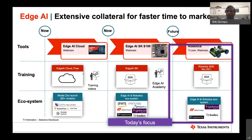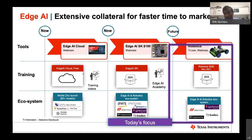The third pillar of our support system is the ecosystem. We have partnered with quite a few companies to offer a comprehensive ecosystem for customers — whether you're looking for algorithms, specialized industrial cameras for machine vision, or analytics expertise. We have multiple third-party partners to choose from. Looking ahead, we're going to have more development kits on the robotics side, as robotics is revolutionizing lifestyles from home to factory.